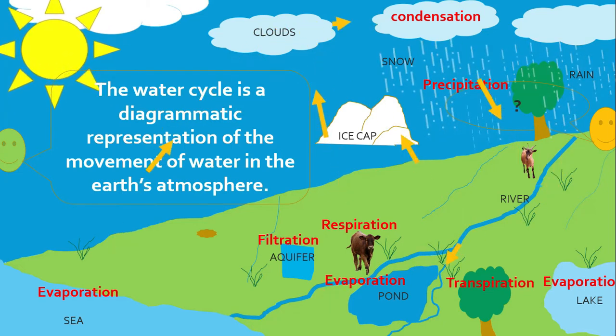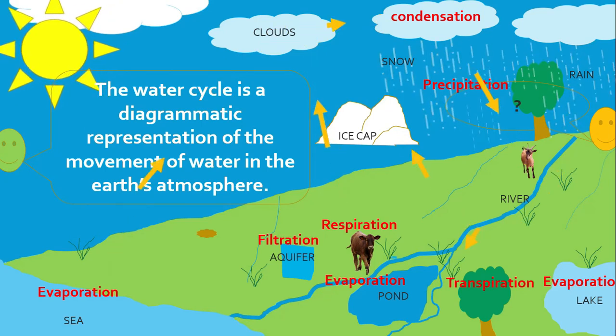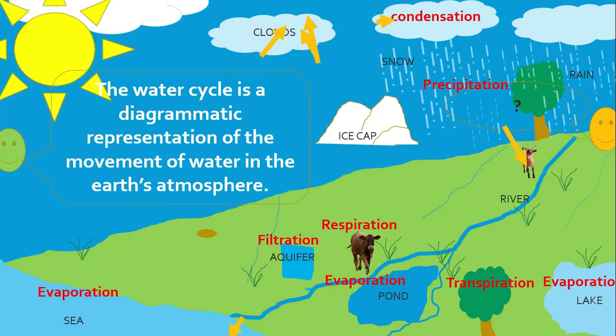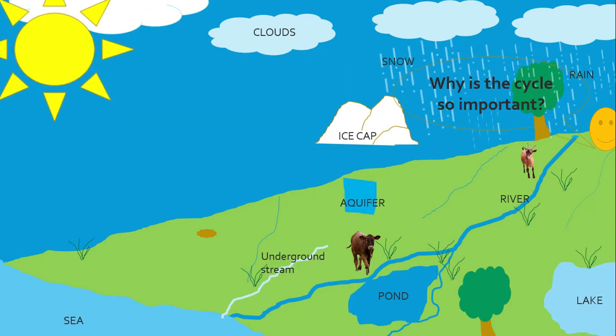Now, the arrows are showing you the sequence in which the water is moving and from where it's coming and, of course, going.